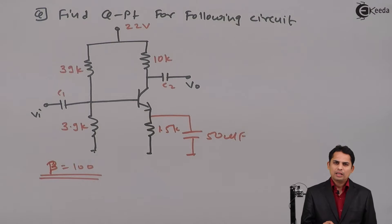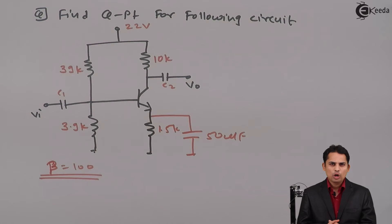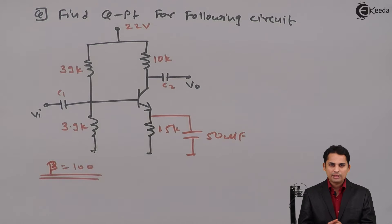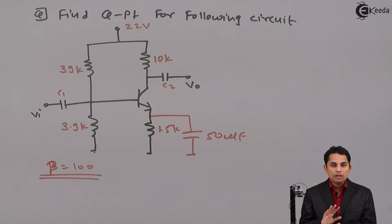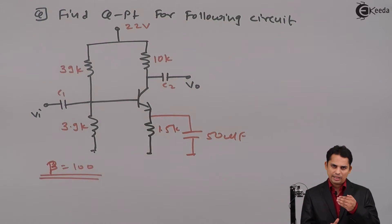In this type of problem, there will be 4 steps we need to apply in order to get the Q point of the circuit. Why 4 steps? Previously, for fixed bias or collector to base bias, we used to apply only 3 steps. The reason behind applying one more step is that in step 1 we will convert this circuit into Thevenin's equivalent circuit. That is the only step added. Step 2 will be to find out base current IB. Step 3 will be to find out collector current IC. And step 4 will be to find out collector to emitter voltage VCE.